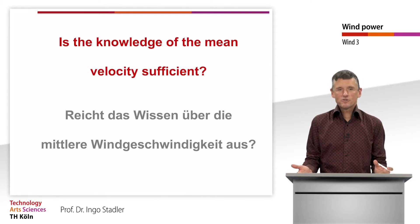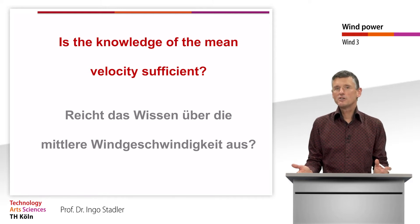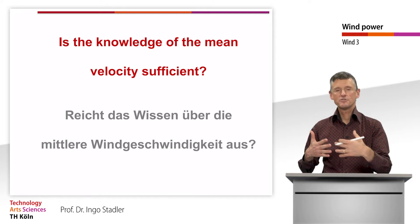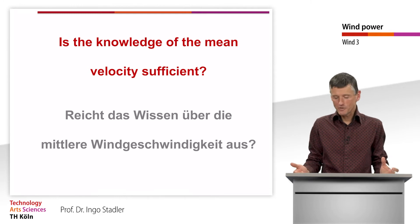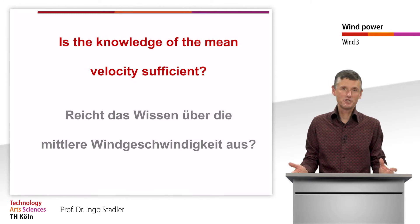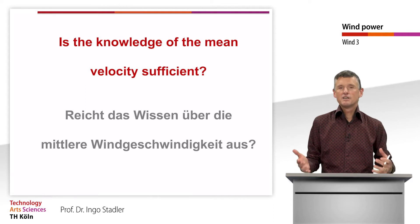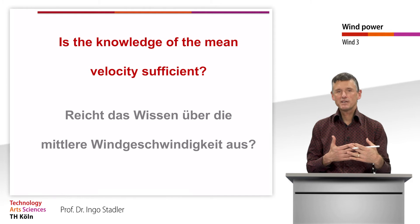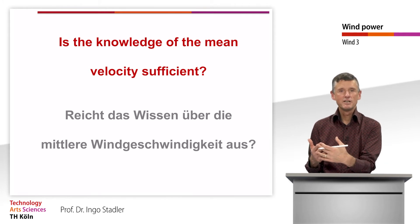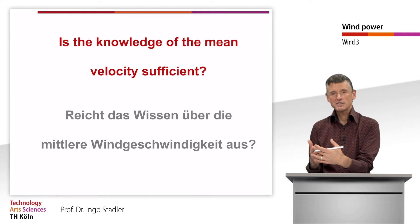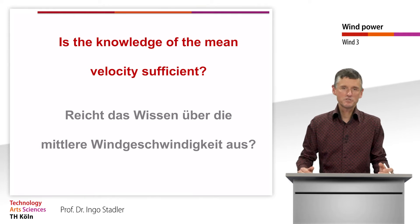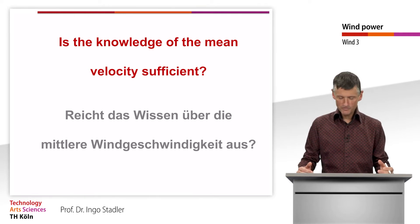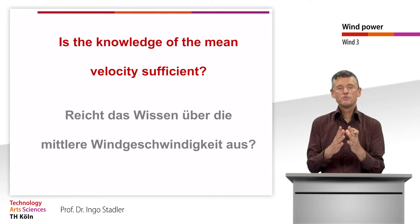Quite often we are confronted with the question: is it enough when we know the mean velocity of a certain site for the wind speeds? The answer is clearly no, because since power depends on wind velocity to the third power, we make a big error when we just calculate with the mean wind speed. Therefore we need to consider the complete distribution of all wind speeds.